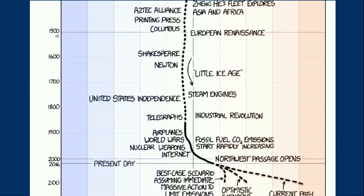You can imagine a similar line for the ozone layer, where public action has pushed us closer to the best-case scenario. Acid rain is maybe more like the optimistic scenario, but there are major things that we have succeeded at.